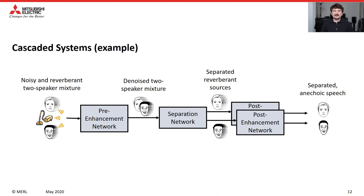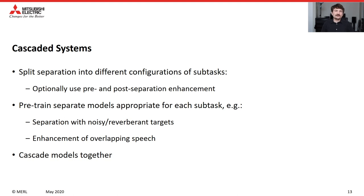Another core component of our experiments is evaluating cascaded systems. In an example cascaded system, we take a noisy and reverberant two-speaker mixture, feed it into an enhancement network trained to remove noise, then feed the resulting reverberant mixture into a separation network producing two reverberant sources, then pass those through an enhancement network to remove reverberation, resulting in final clean, separated, anechoic speech. We pre-train separate models for each subtask — including separation with noisy or reverberant targets, or enhancement of overlapping speech — and then cascade the appropriate submodels to solve the final core condition task.